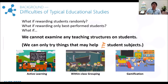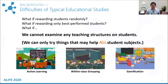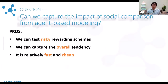Unfortunately, an obvious limitation in educational studies is that we cannot test whatever rewarding schemes with students. In practice, we can only try things that should be good for all students. However, a comprehensive experiment is always important for us to understand a particular factor. Therefore, our research question is whether we can build up artificial classrooms to examine the utility of any rewarding schemes under students' social comparisons.